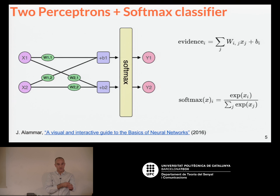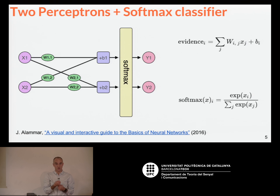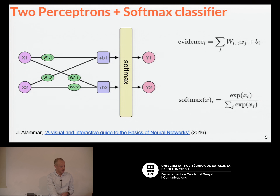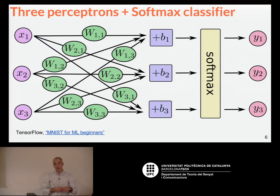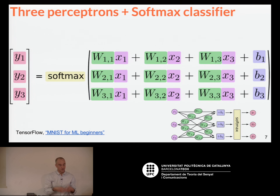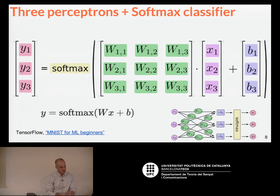If you have two perceptrons and then you add a softmax layer, you can build a classifier. Given an input, you can predict which class it belongs to and also predict a probability for your predicted class. You can make things much more complicated — here there are three classes, just by adding perceptrons. And mathematically, you can decompose this in matrix or algebraic form.